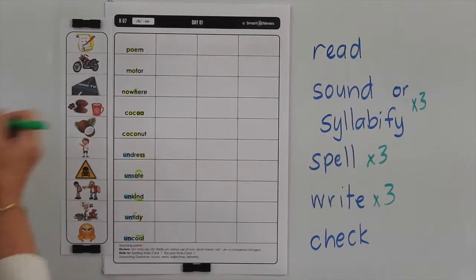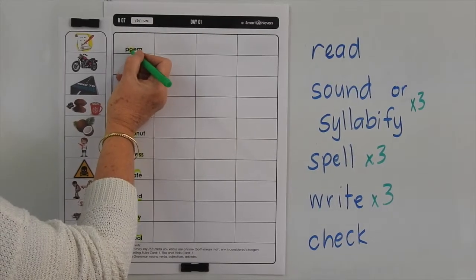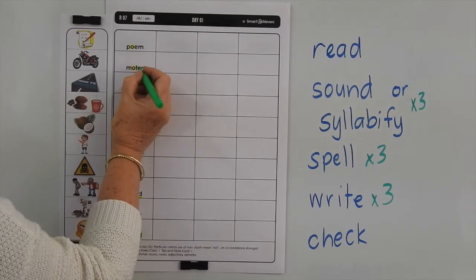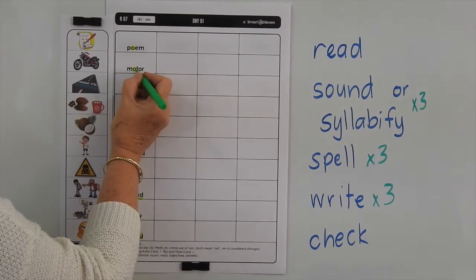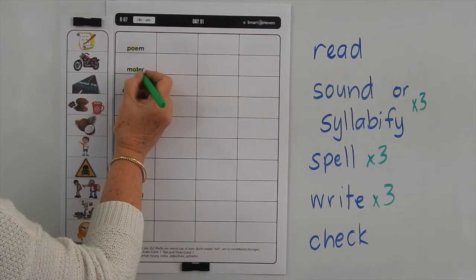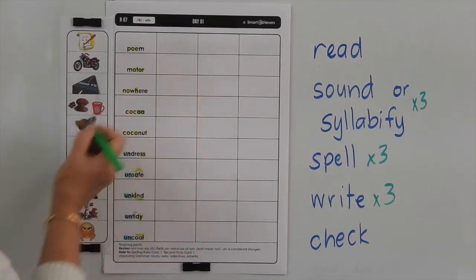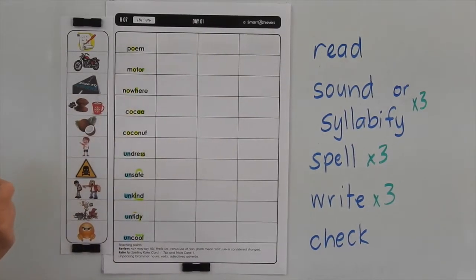Poem is just as you sound it, so you've got that long O sound there. Motor — after a T we quite often use the O-R.